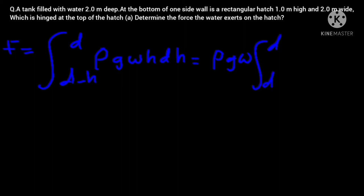So with the upper limit of d, lower limit d minus h, h times dh, because in this case ρ, g, w, they are not changing, they are just constants. But dh and h, they are changing.